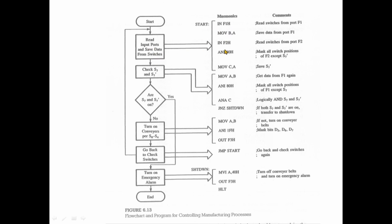The value accumulated in the accumulator will be saved to another register to store the switch values. First, we read the address at F1H. The value of F1 is accumulated and stored in F1H.